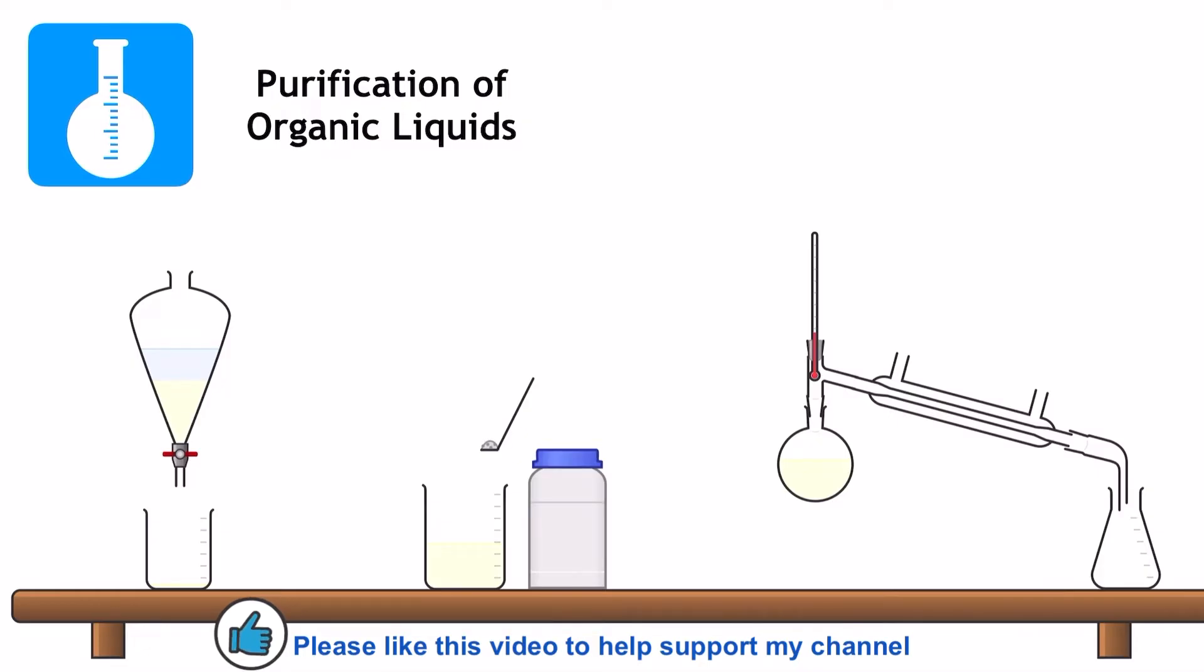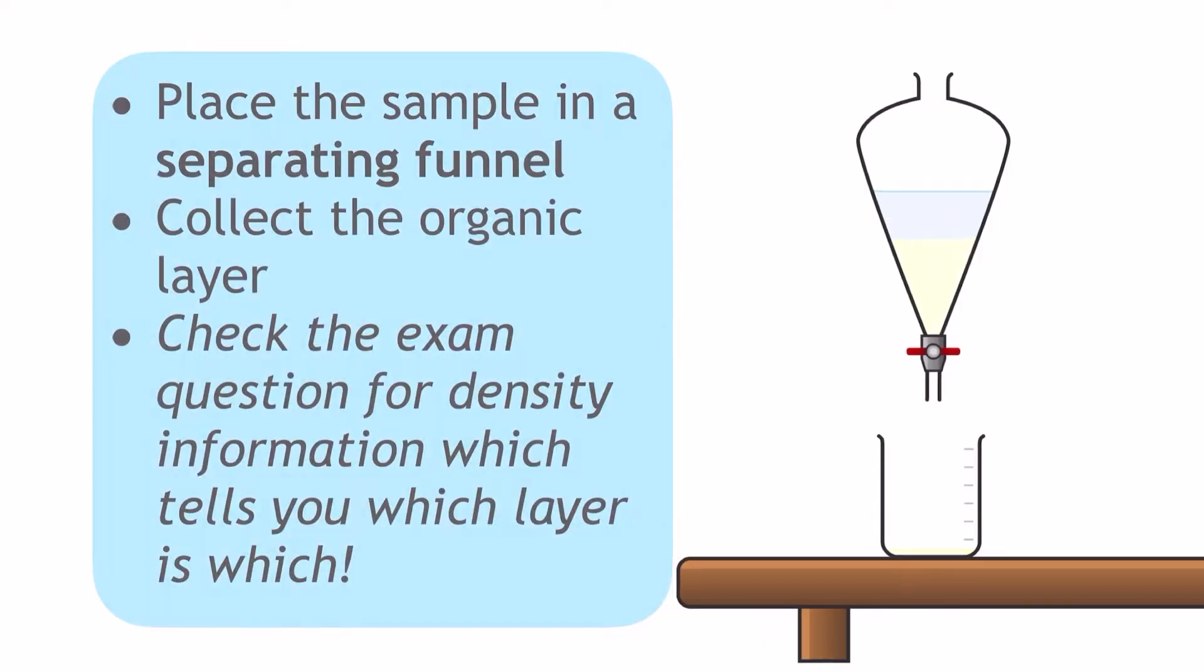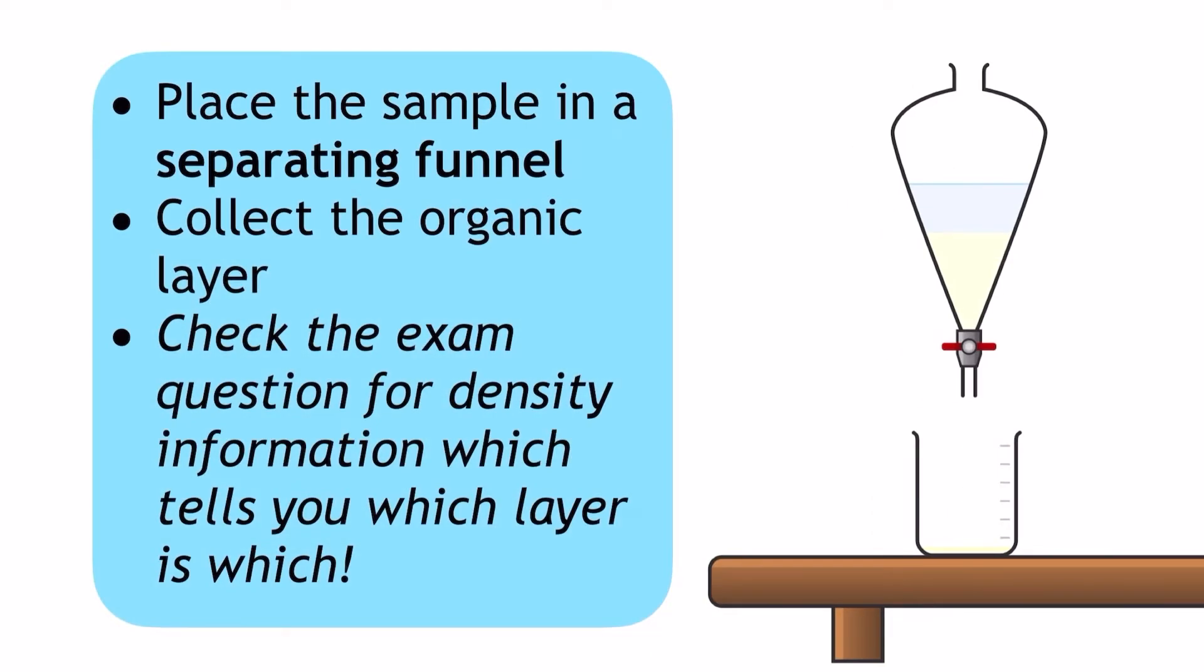It's split into three stages and involves a lot of reading the exam question very carefully. First, you're going to place the sample in a separating funnel and collect the organic layer. Do not always assume that this is going to be the bottom layer though. You need to check the exam question for density information very carefully and make sure you're suggesting the correct one.